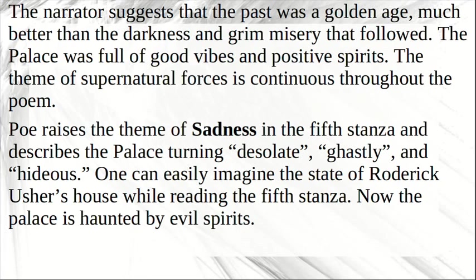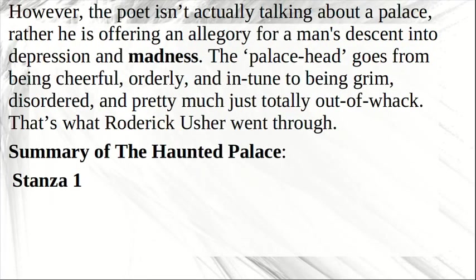Poe raises the theme of sadness in the fifth stanza and describes the palace turning desolate, ghastly, and hideous. One can easily imagine the state of Roderick Usher's house while reading the fifth stanza. Now the palace is haunted by evil spirits. However, the poet isn't actually talking about a palace — rather, he is offering an allegory of a man's descent into depression and madness. The palace goes from being cheerful, orderly, and in tune to being grim, disordered, and totally out of control. That's what Roderick Usher went through.